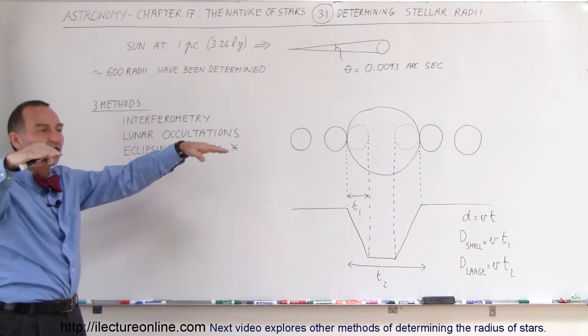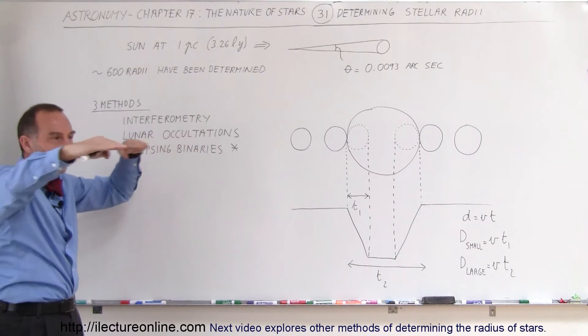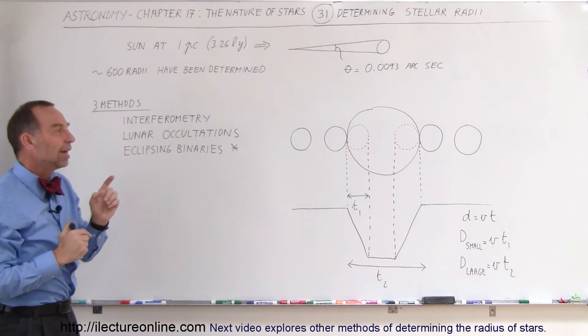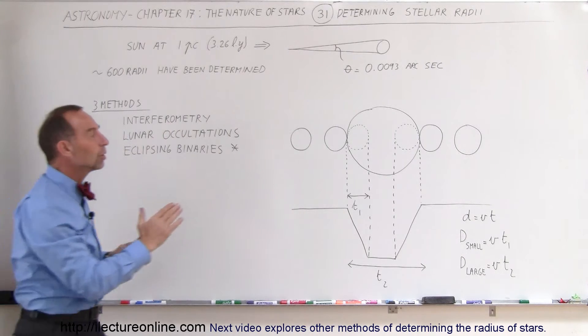If the line of the star system is in such a way that when they pass one another, they're in the direct view from us to the stars, then they will occult one another. One will cover up the other.